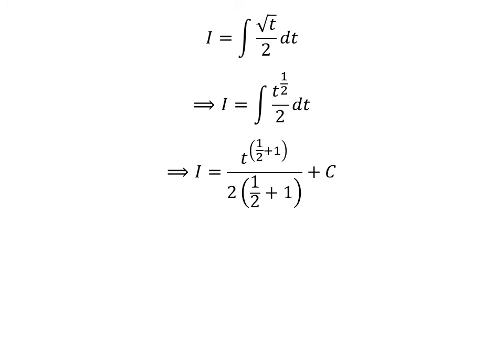So, i is equal to t raised to the power of one-half plus 1, divided by 2 times (one-half plus 1), plus capital C, where capital C is the arbitrary constant of the indefinite integral. Never forget to add this constant. We know one-half plus 1 equals 3 over 2, and 2 times 3 over 2 equals 3. So, i equals t raised to the power of 3 over 2, divided by 3, plus capital C.